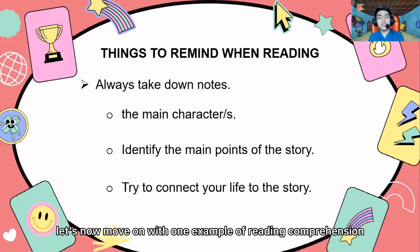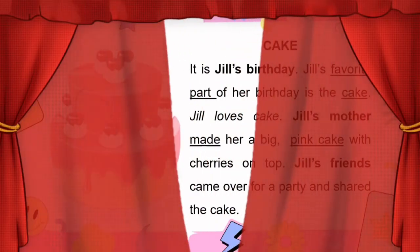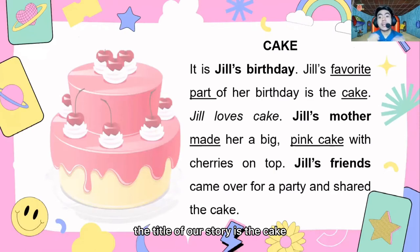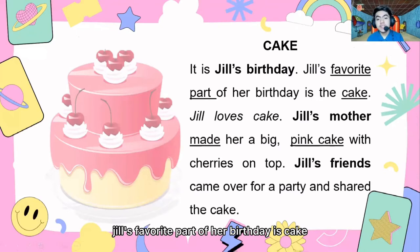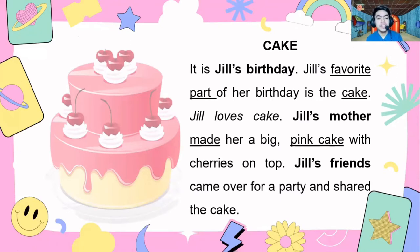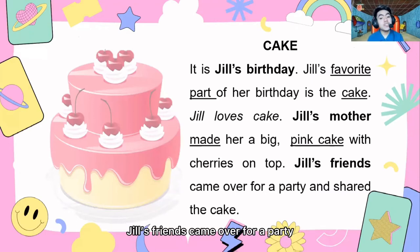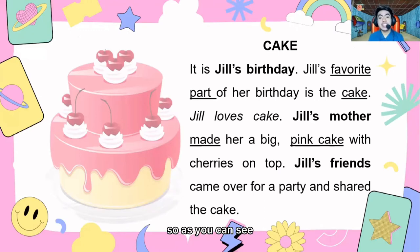Now let's move on with one example of reading comprehension. The title of our story is 'The Cake.' It is Jill's birthday. Jill's favorite part of her birthday is cake. Jill loves cake. Jill's mother made her a big pink cake with cherries on top. Jill's friends came over for a party and shared the cake.